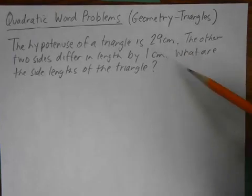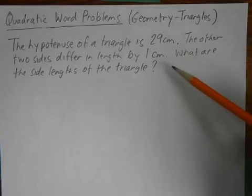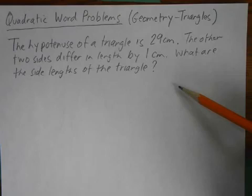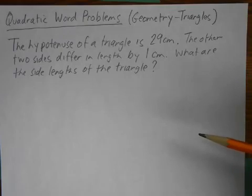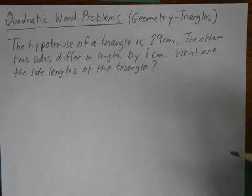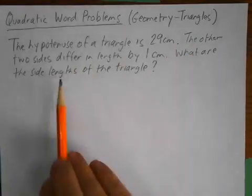The hypotenuse of a triangle is 29 centimeters. The other two sides differ in length by one centimeter. What are the side lengths of the triangle? So it doesn't seem like there's a whole lot here. They give us one side length and they tell us that the other two side lengths are one centimeter difference in length. But no formulas, no squared or anything like that.